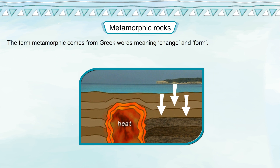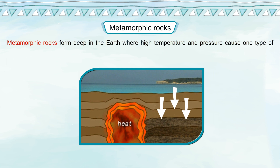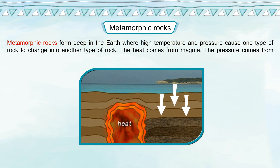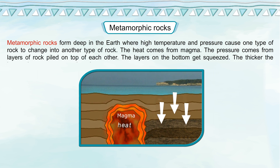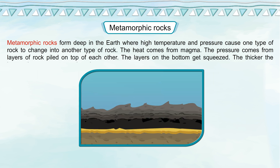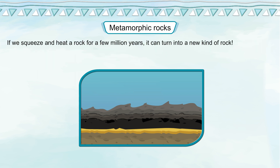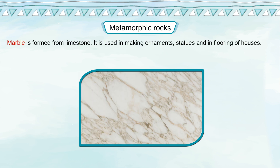Metamorphic Rocks: The term metamorphic comes from Greek words meaning change and form. Metamorphic rocks form deep in the earth where high temperature and pressure cause one type of rock to change into another. The heat comes from magma and the pressure comes from layers of rock piled on top of each other. The layers on the bottom get squeezed — the thicker the layers, the more pressure there is. If we squeeze and heat a rock for a few million years, it can turn into a new kind of rock.